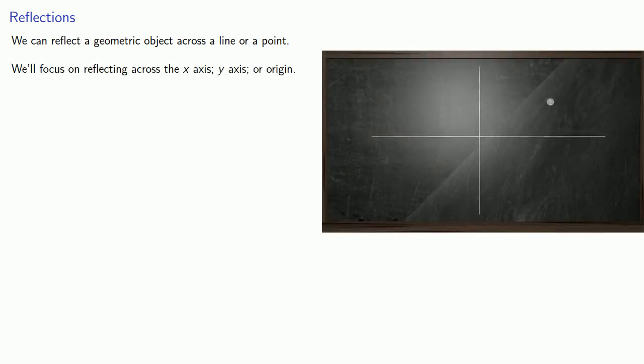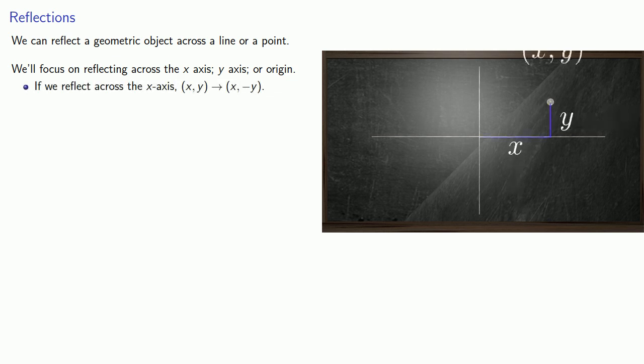If we reflect across the x-axis, a point whose coordinates are (x, y) becomes a point whose coordinates are (x, negative y).